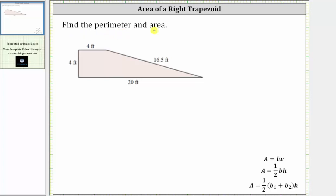We're asked to find the perimeter and the area of the right trapezoid. This is a right trapezoid because we have a right angle here. And because this side has a length of four feet, this also gives us the height of the trapezoid.